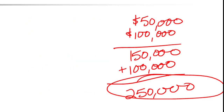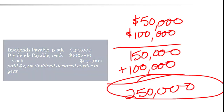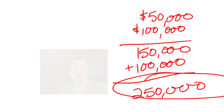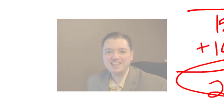The rest of the journal entries are straightforward — simply debit the payables and credit the cash, and the checks go out to all the stockholders. That wraps up our discussion of cash dividends. In our next segment we'll talk about stock dividends.